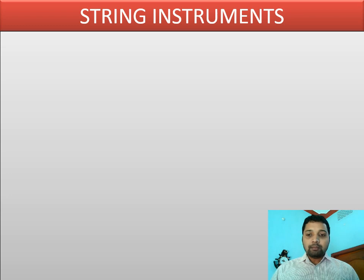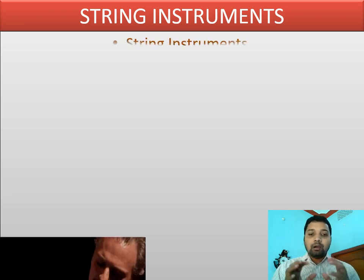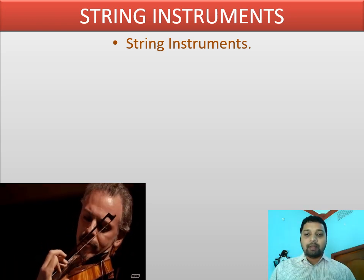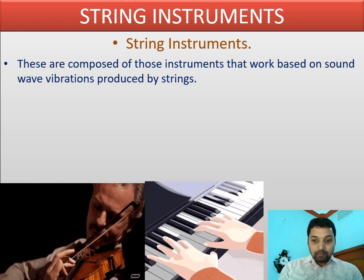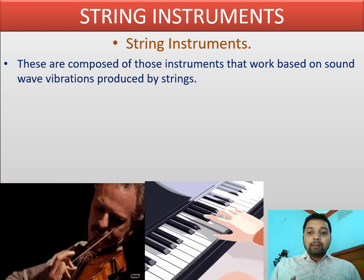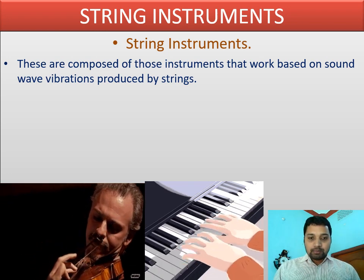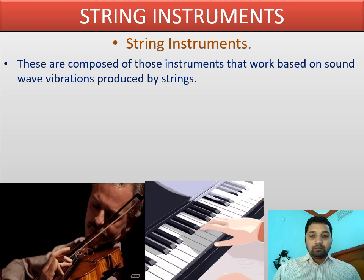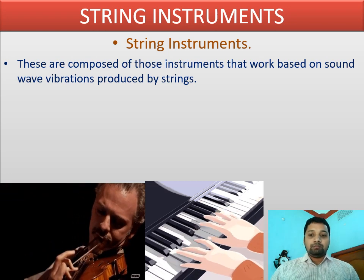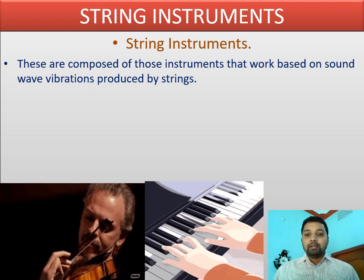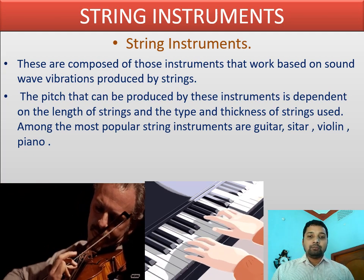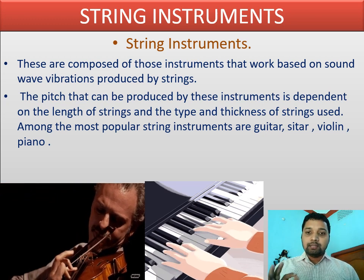Another type is the string instrument. In a string instrument, the string of the musical instrument will vibrate — the metallic string vibrates. Examples include guitar, violin, sitar, and piano. The sound and pitch produced by a string instrument is completely based on the length of the string and the thickness of the string.